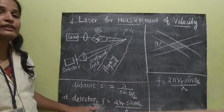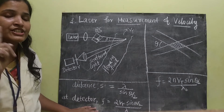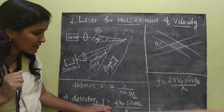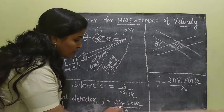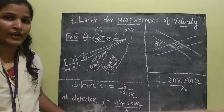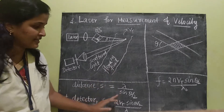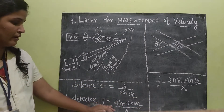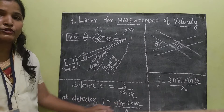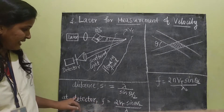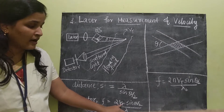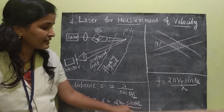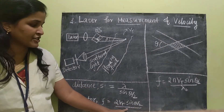At the detector, a frequency shift will be detected. That frequency shift will be proportional to the velocity. This is the mathematical proof for the proportionality: the frequency at the detector will be proportional to the velocity and it is shifted because of the Doppler shift.